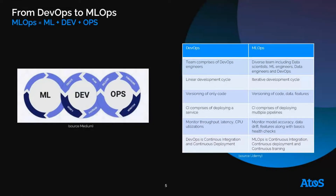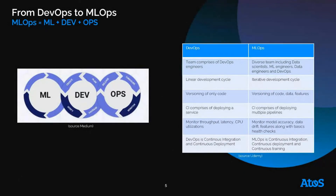MLOps is the idea to bring DevOps principles into machine learning with the same goal: remove the friction between dev — in this case, data scientists — and ops. There are some differences between DevOps and MLOps. In DevOps, versioning is only for the code. In MLOps, you version the code, data, model, and features — with the core principle that you cannot improve something that you don't measure.